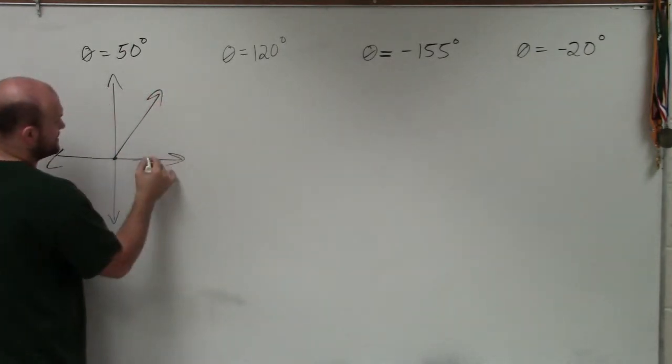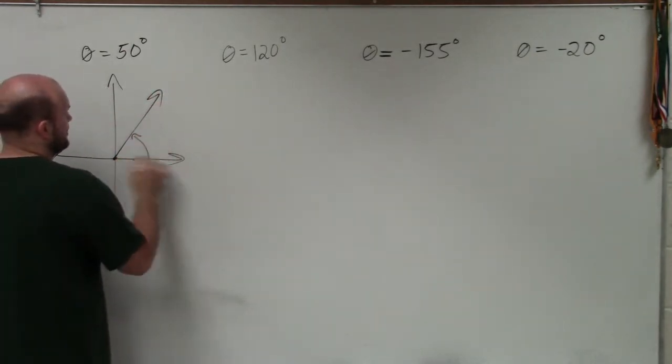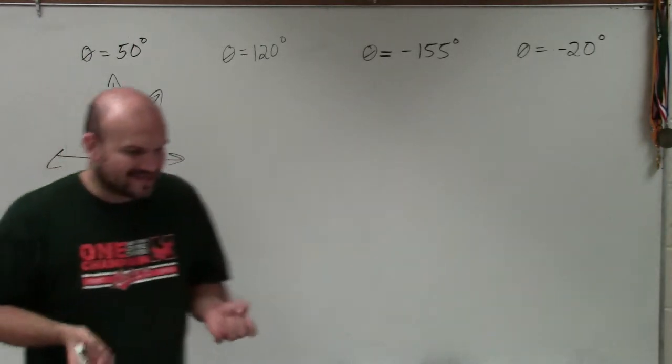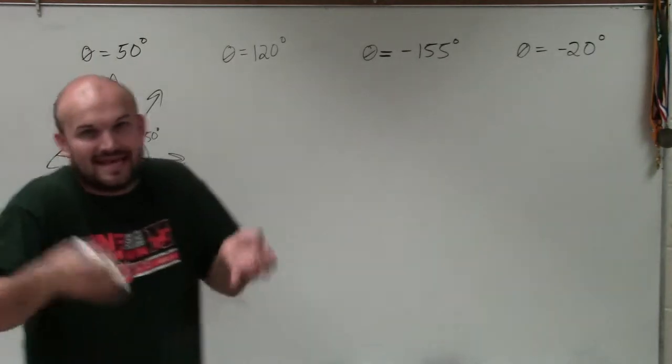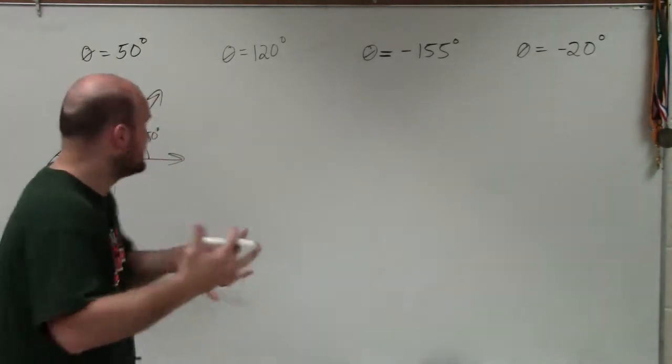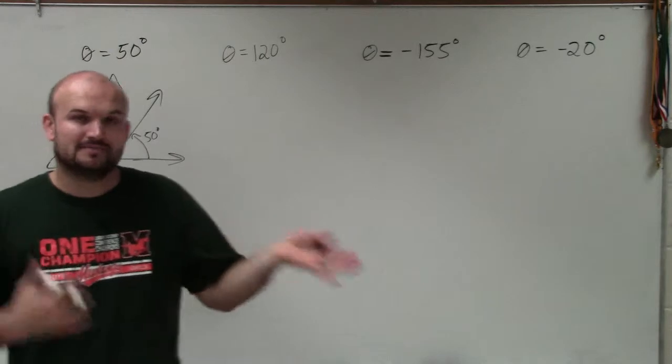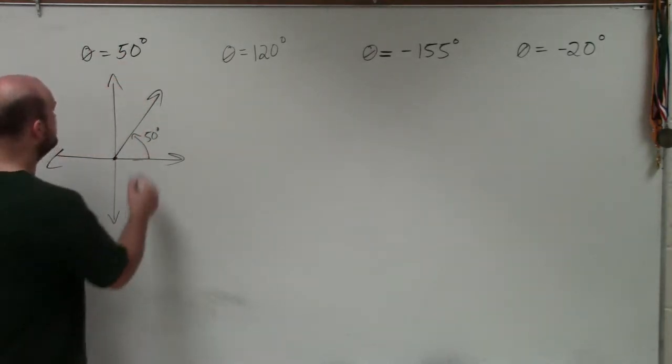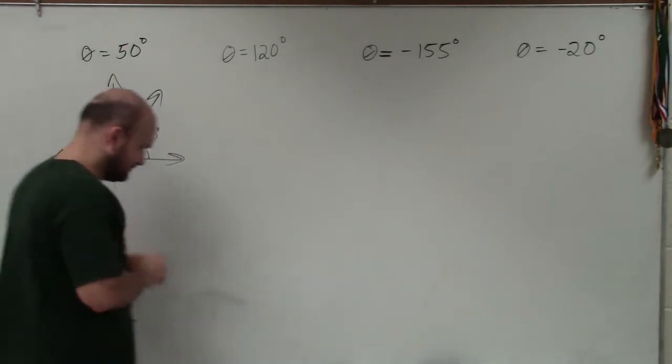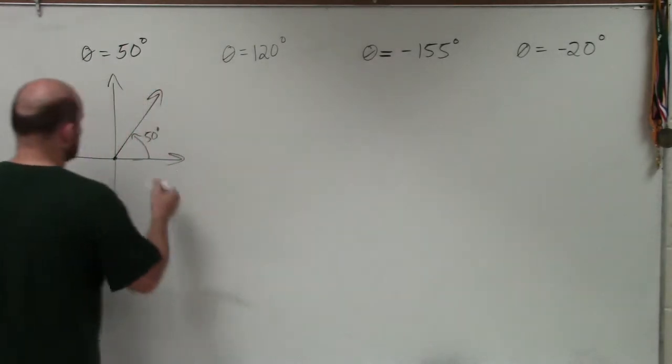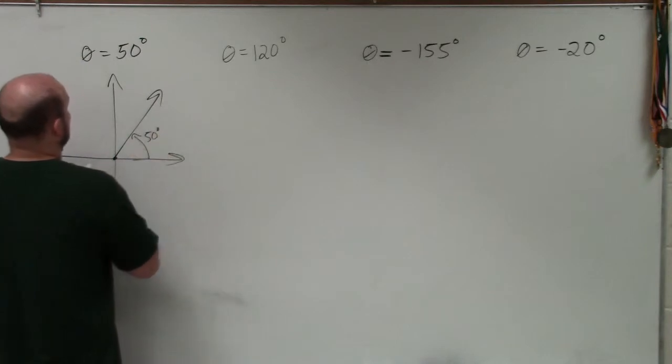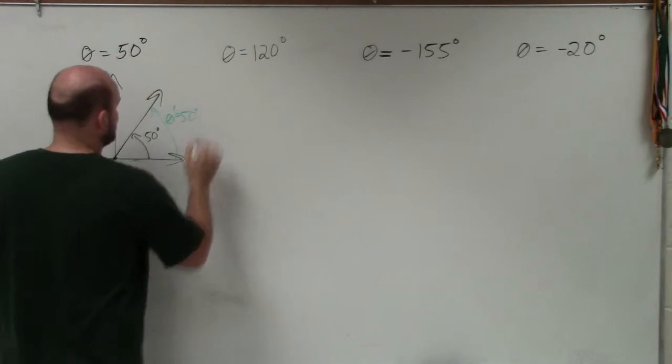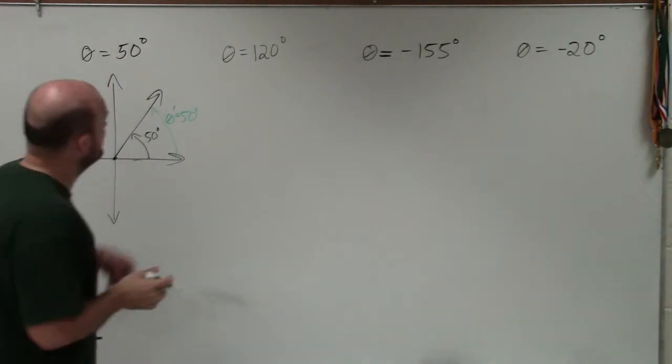First of all, though, a reference angle technically is going to be an acute angle. But let's take a look at this angle here, 50 degrees. Remember, we're always going to start at the terminal side and go to our initial side, to our terminal side is 50 degrees. Well, this one does not have a reference angle. The reference angle is the angle of itself. So theta prime is equal to 50 degrees.